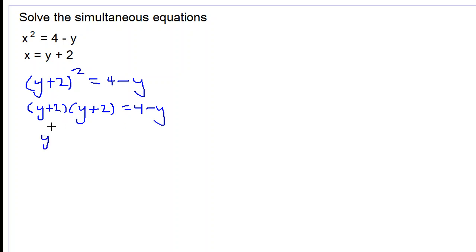y times y is y squared. y times 2 is 2y. 2 times y is 2y. 2 times 2 is 4. And that is equal to 4, take away y.